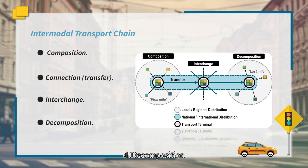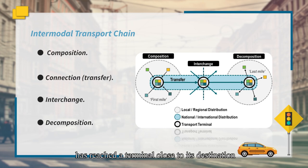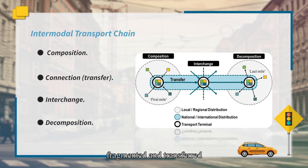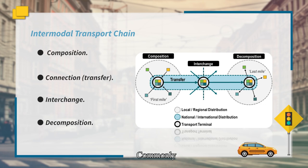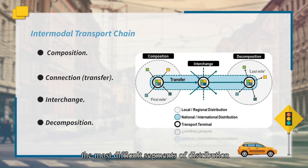The fourth step is decomposition. Once a load of freight has reached a terminal close to its destination, it must be fragmented and transferred to the local freight distribution system, commonly referred to as the last mile, and often representing the most difficult segment of distribution.